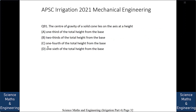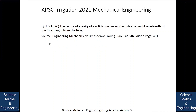The centre of gravity of a solid cone lies on the axis at a height: A. one third of total height from the base, B. two thirds of total height from the base, C. one fourth of total height from the base, or D. one sixth of total height from the base. The answer is C: one fourth of the total height from the base. Note: for a triangle, the centroid is at one third of total height from the base.